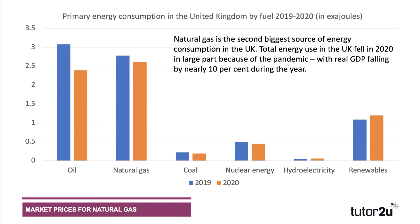This chart shows the primary energy consumption in the UK by source of fuel. You can see that oil and natural gas are by far the most consumed primary energy fuels in the UK. Coal demand has fallen dramatically over the last 10 to 30 years, while renewable energies on the right-hand side have continued to experience strong growth. Overall energy use in the UK fell in 2020 because of the pandemic and lockdown — real GDP fell by nearly 10% — and some of the demand for energy is derived from industrial use and transport.